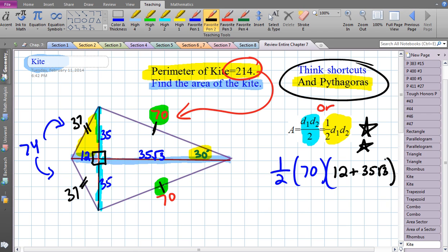The only thing left to do is evaluate this answer and simplify to come up with the area of the kite. Half of 70 is 35. Now we're going to use the distributive property, so 35 times 12 is 420, and then 35 times 35 is 1225√3, and all that is units squared.